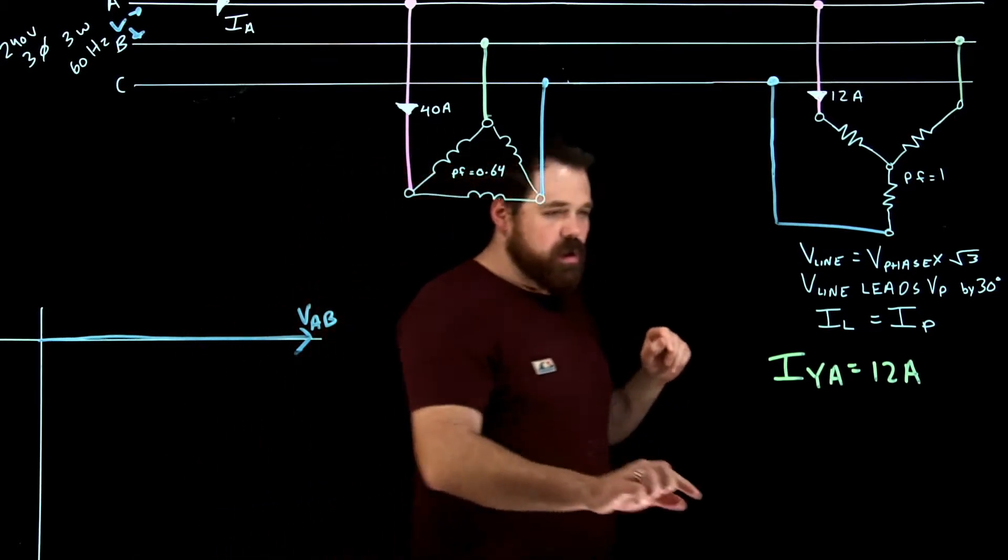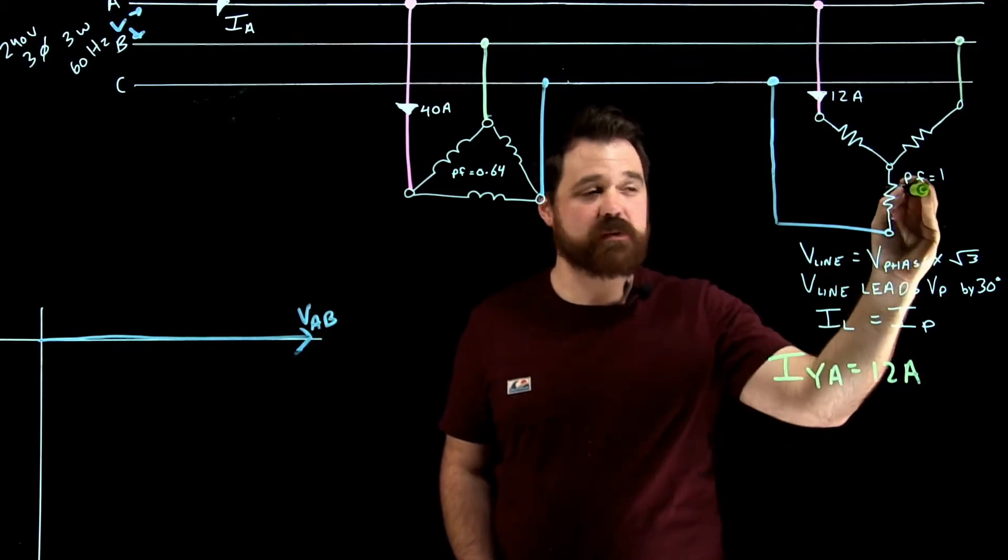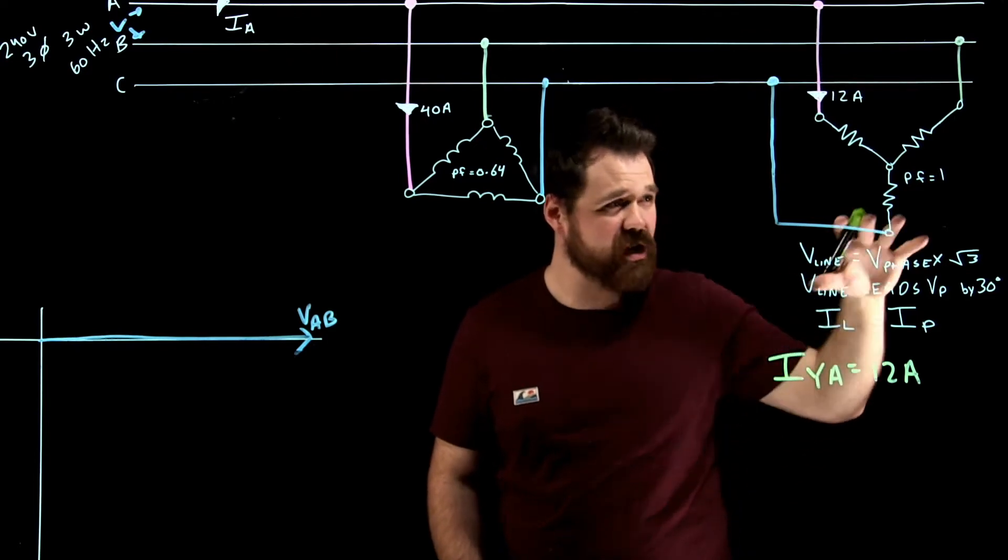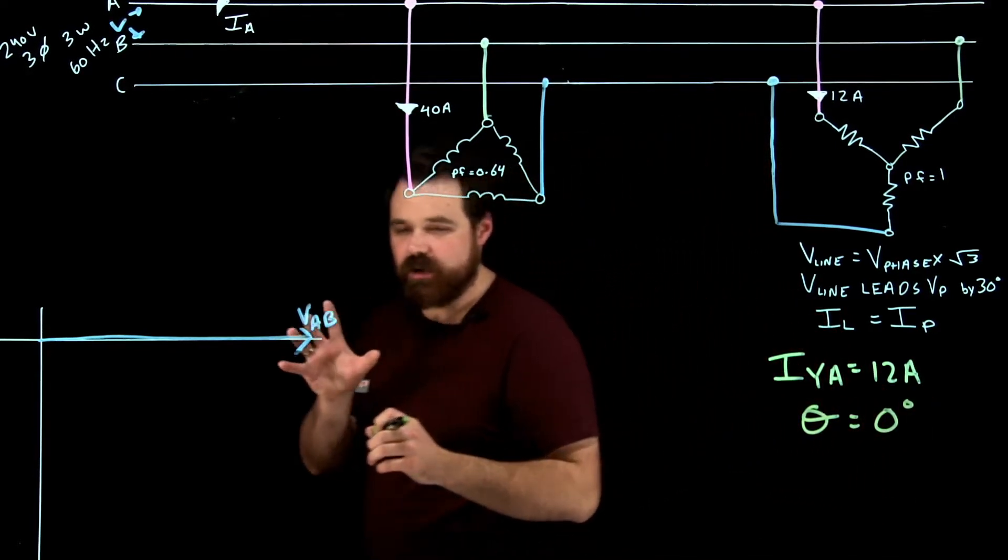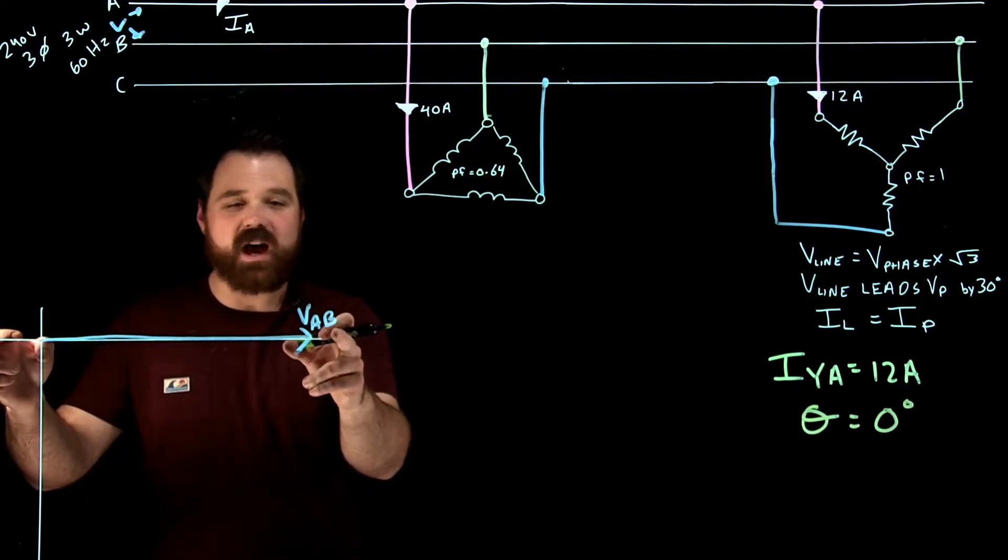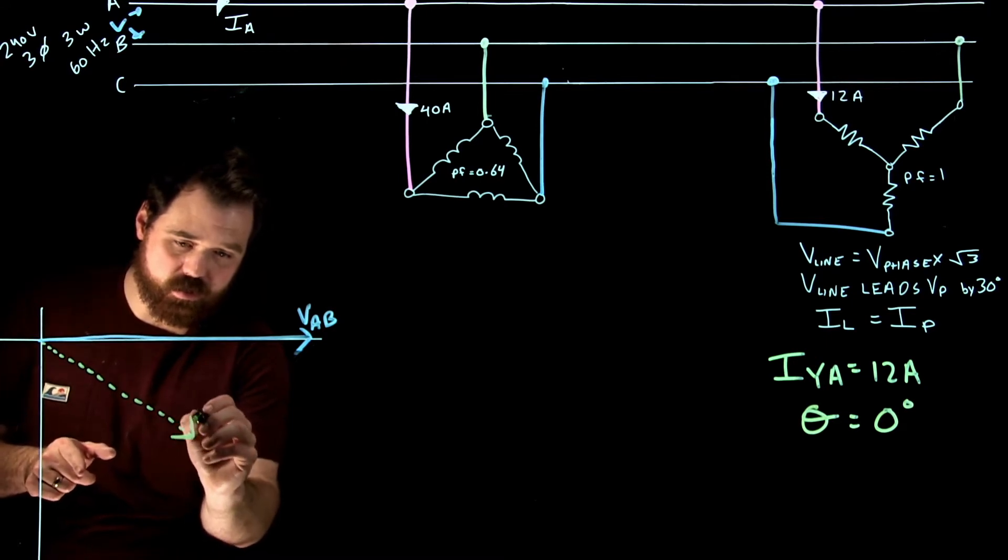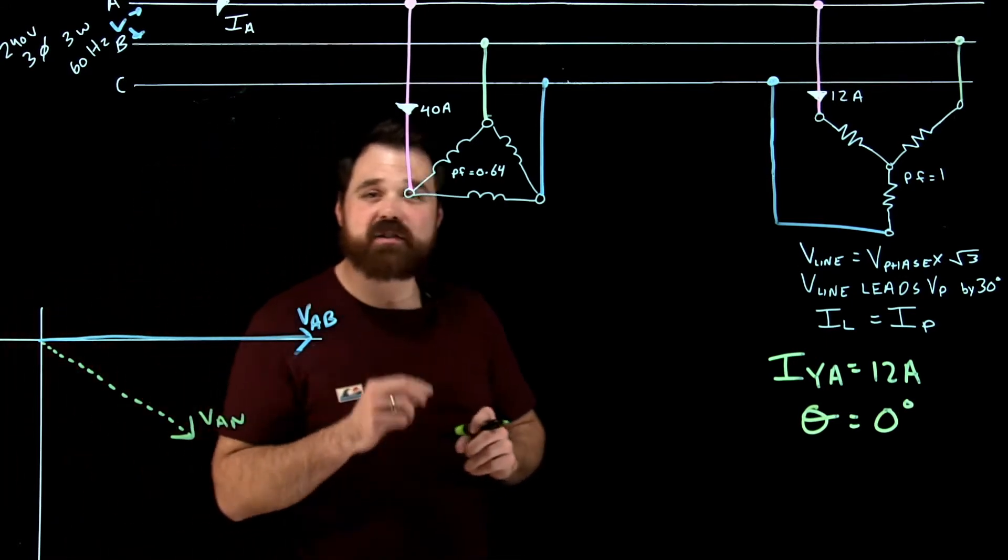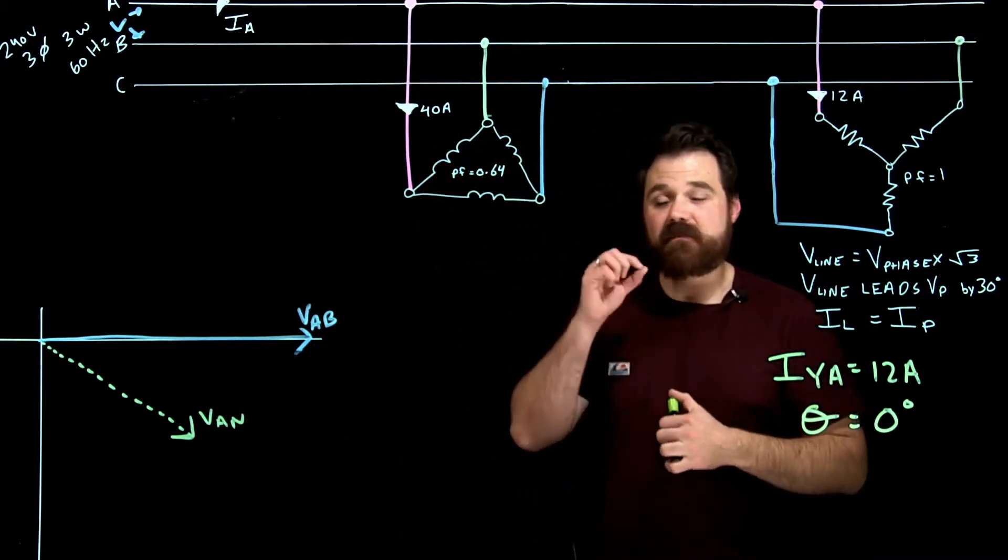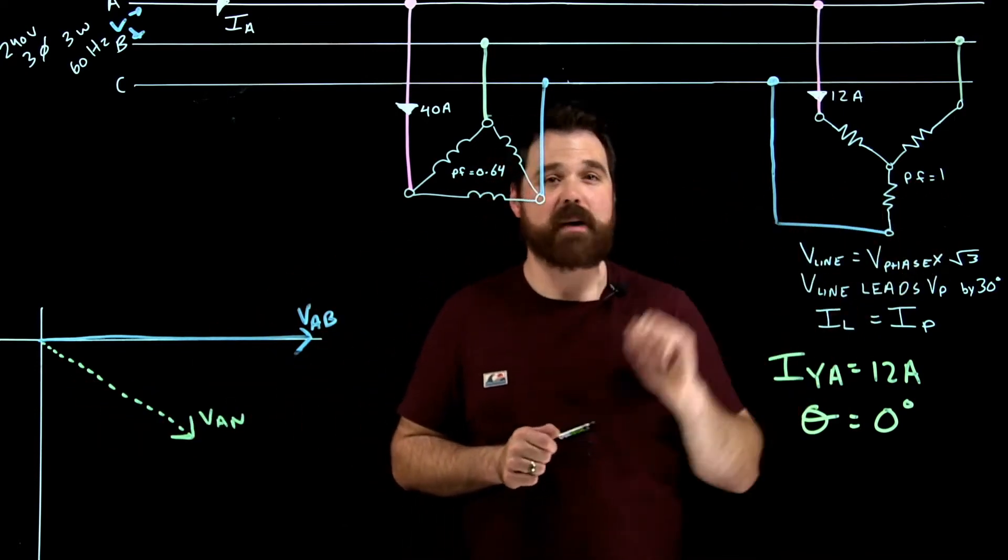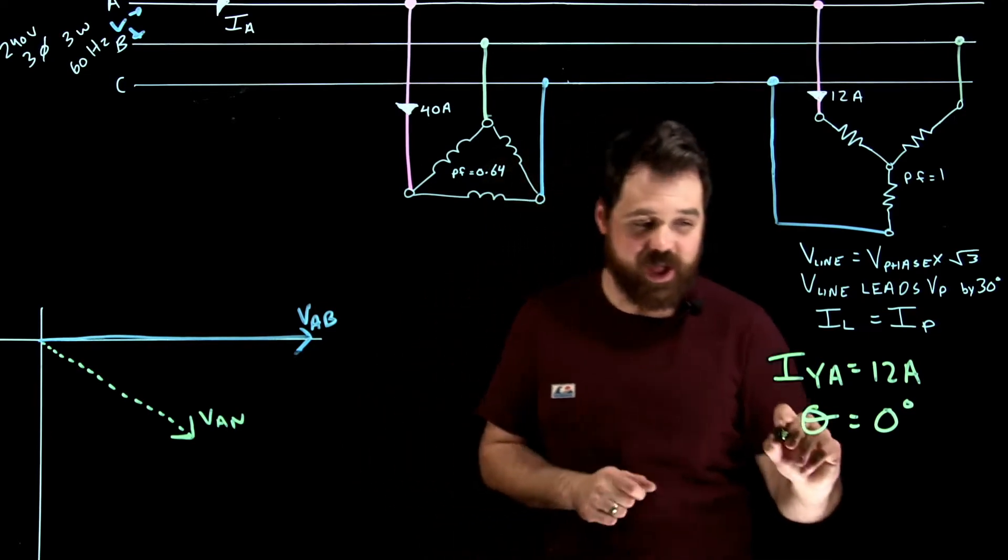Now I need to think for a minute. My current here, my phase current is in phase with my phase voltage. That's what a power factor is - it has to do with the phase current and the phase voltage. So my theta for this, my phase angle, would equal zero degrees. If my line voltage A to B is here at zero, my phase voltage V A to N is actually at 330 degrees because my line voltage leads my phase voltage by 30 degrees. So if my phase voltage is at 330 degrees, that means that in this case, because I have that power factor of one or phase angle of zero, my line current and my phase current are both at 330 degrees.